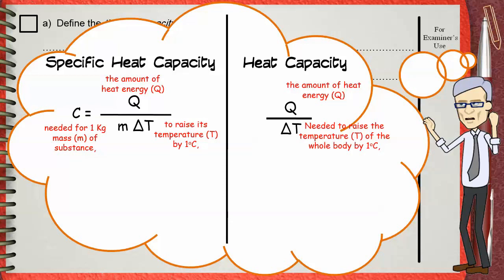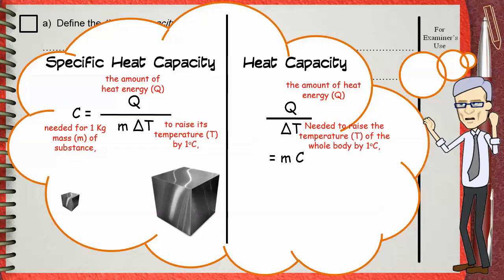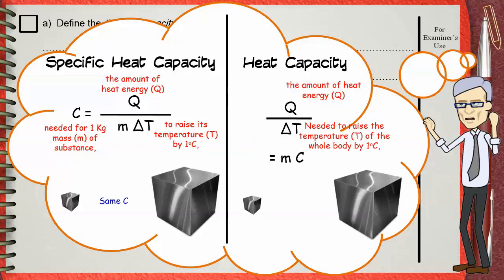Heat capacity also has another equation: MC — mass multiplied by the specific heat capacity. If you have two bodies that are different in mass but made of the same material, they will have the same specific heat capacity. But they will not have the same heat capacity — the greater the mass, the greater the thermal capacity.